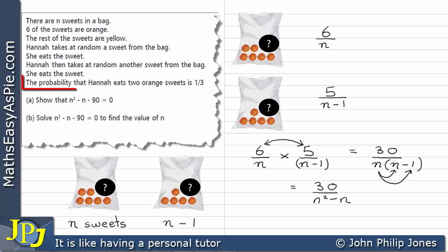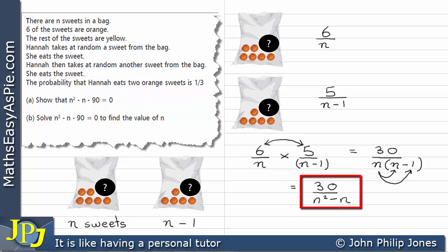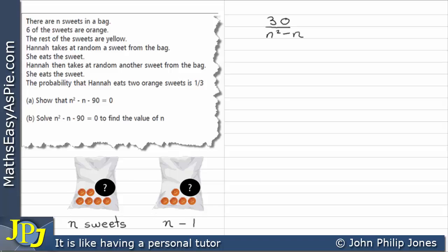Looking at the question, it states that the probability Hannah eats two orange sweets is one third. Since she selects and eats the sweets, this fraction also represents that probability. So we can set our ratio equal to one third: 30 over N squared minus N equals one third. Now we manipulate this to derive the required result.